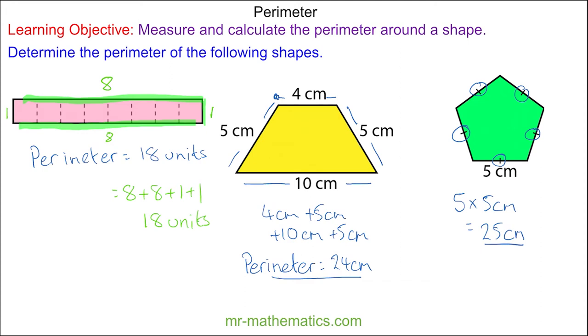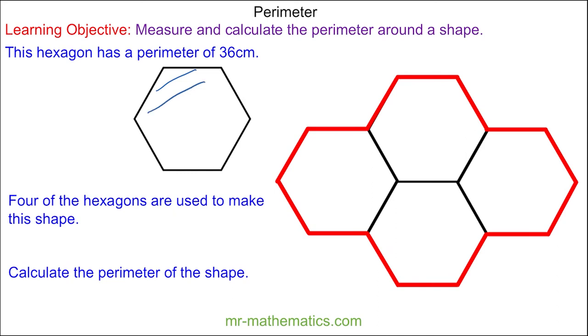Let's try one more question. In this question we have a hexagon with a perimeter of 36 centimeters, and 4 of the hexagons are used to make this red shape. Do you want to try and calculate the perimeter of the red shape? You can pause the video and resume it when you are ready.